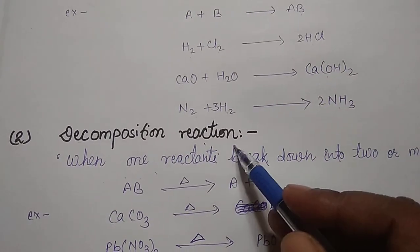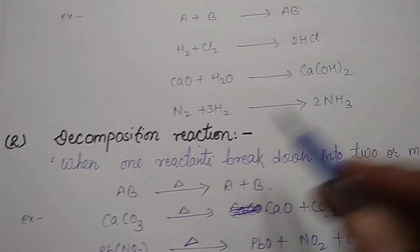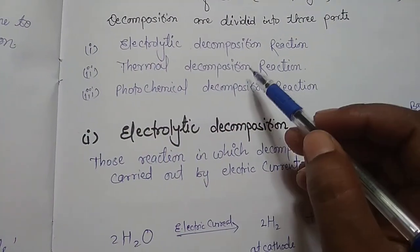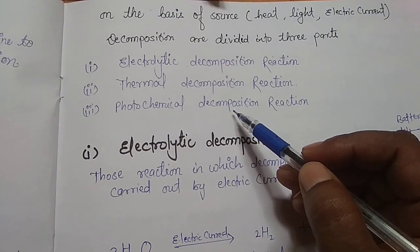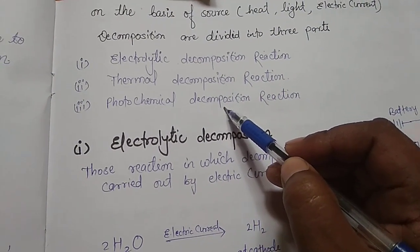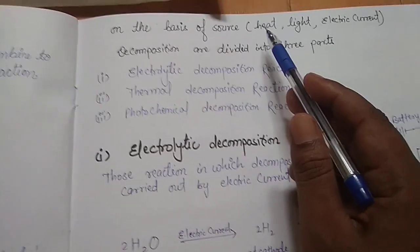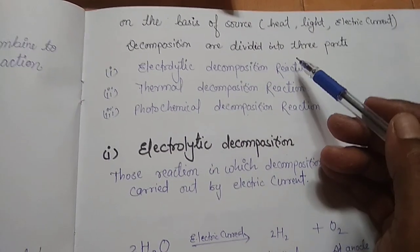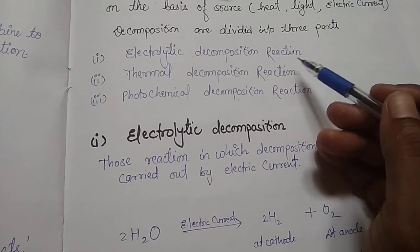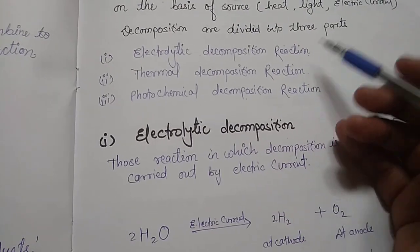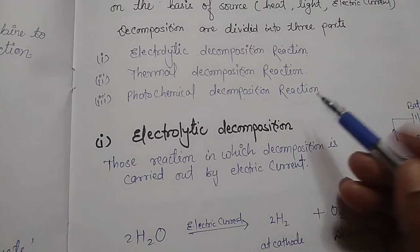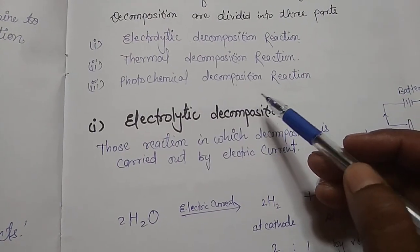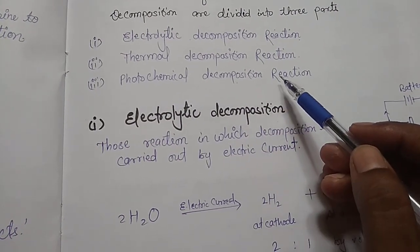On the basis of energy source, decomposition reactions are of three types. First, electrolytic decomposition. Second, thermal decomposition reaction. Third, photochemical decomposition reaction. Decomposition can be carried out by heating, by light, or by electric current. If the reactant decomposes by electric current, that will be electrolytic decomposition. If decomposed by heat, that will be thermal decomposition. If decomposed by light, that will be photochemical decomposition reaction.